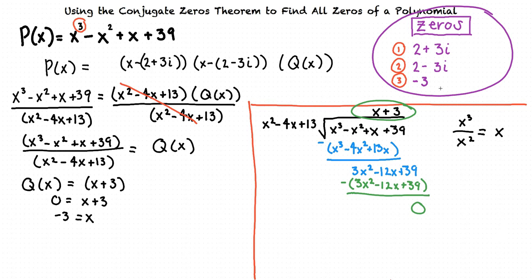To summarize: first, we used the linear factors theorem to identify how many zeros we were looking for. Second, we used the conjugate zeros theorem and the given zero to determine the second zero of the equation. Last, we used the factor theorem and algebraic long division to solve for our third zero.